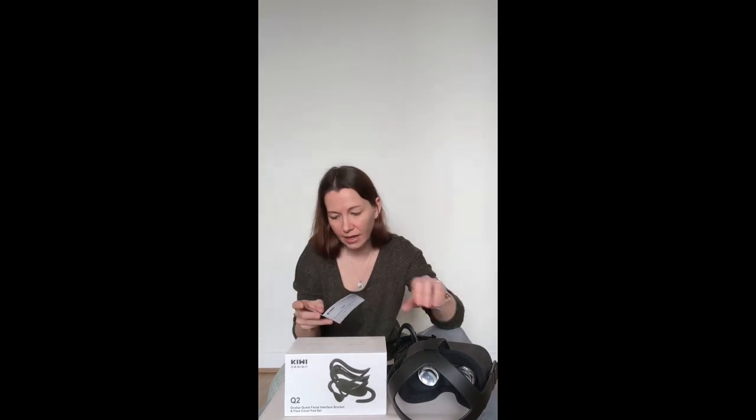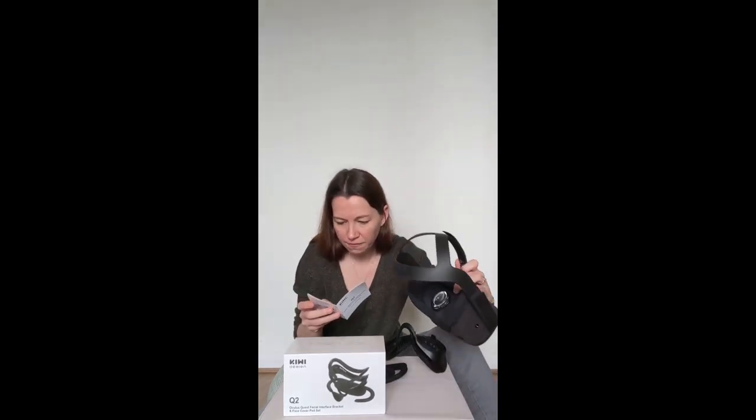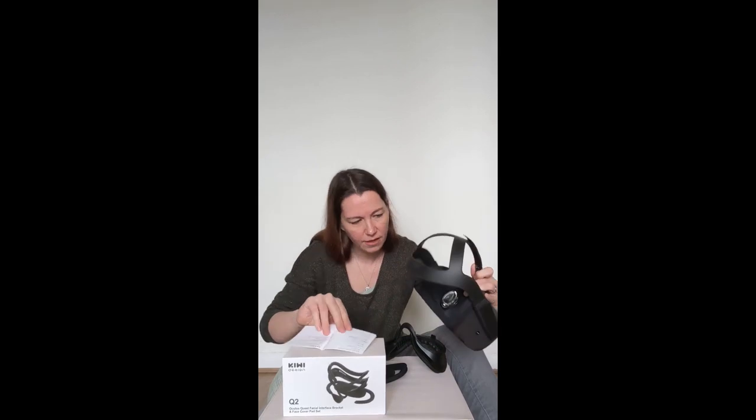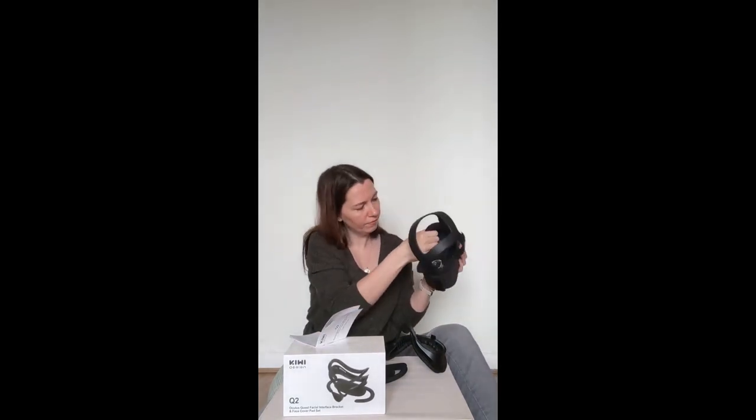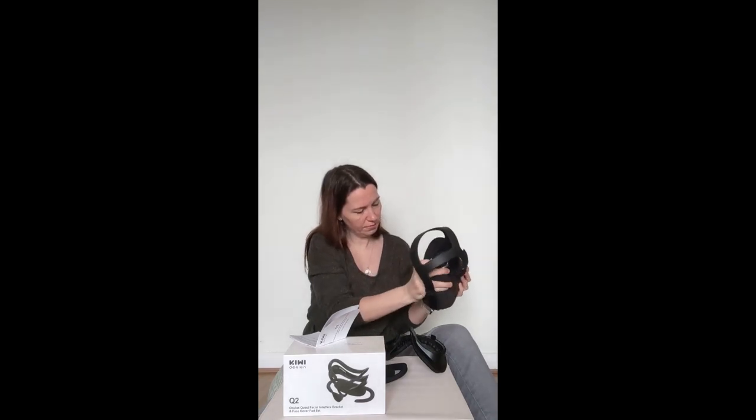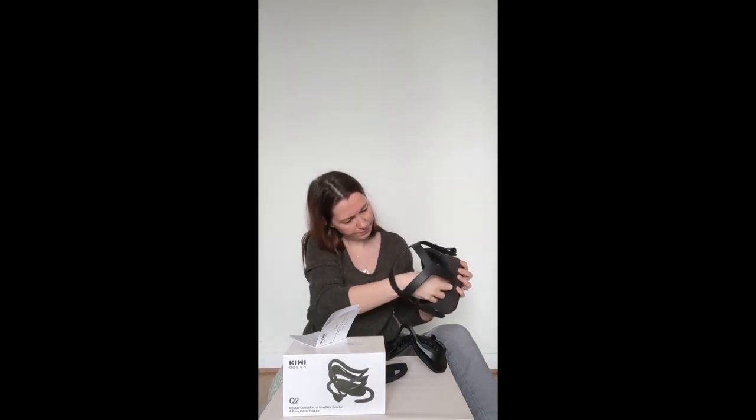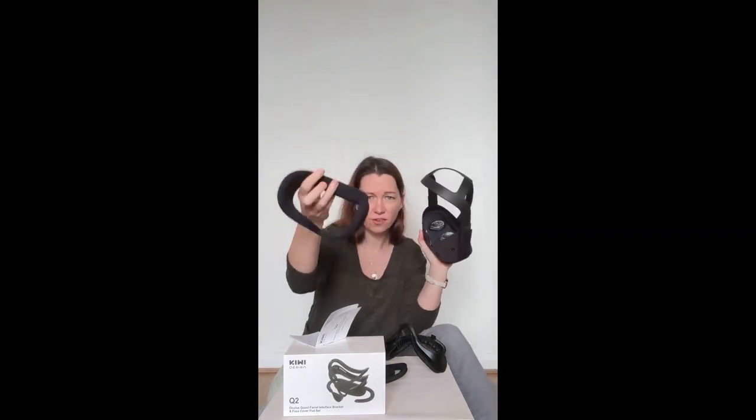So that's the lens cover, which is cool. And then it comes just in all different languages, how to install it. Here's the English bit. How to install: take off the original facial interface brackets, assemble our facial interface bracket to the VR headset. Let's take this out, so you just pull this, and it comes off. Just stuck at the top. There we are, so you just pull that out and that's the original Oculus Quest face part.